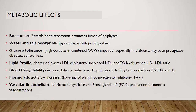Fibrinolytic activity increases by the lowering of plasminogen activator inhibitor. Estrogen promotes endothelial-derived nitric oxide production through increased expression and activity of endothelial nitric oxide synthase, and modulates prostacyclin and thromboxane A2 release. The thromboxane A2 pathway is the key to regulating vasomotor tone in females.